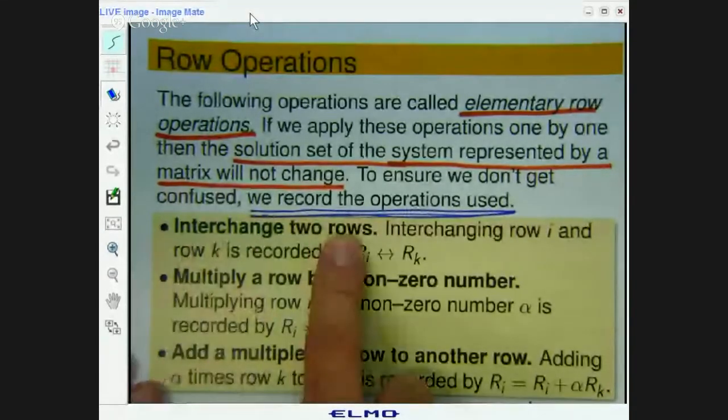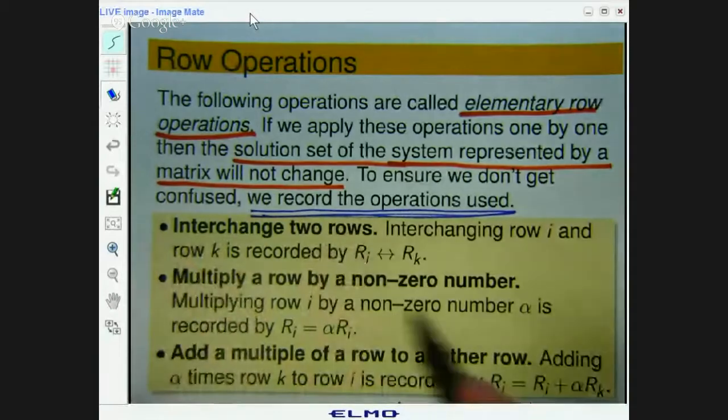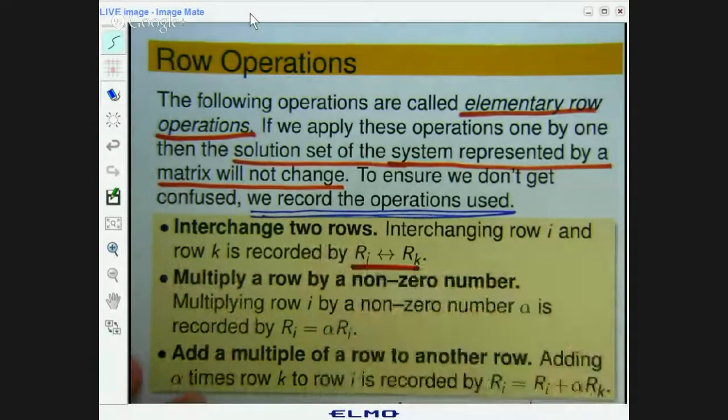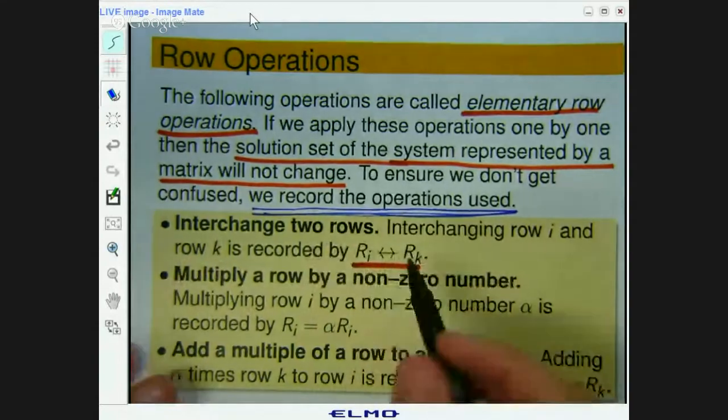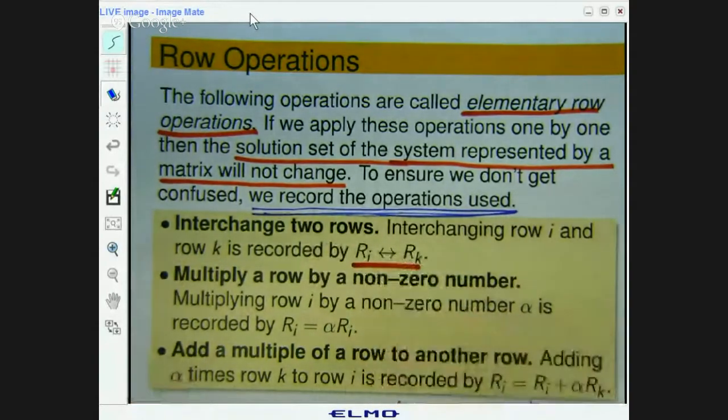Okay. You can interchange two rows. And, for example, if you interchange the ith row with the kth row, then this is how you record it with this little double arrow here.